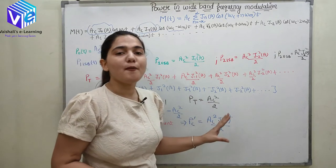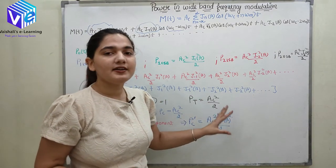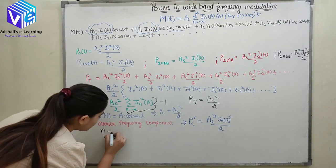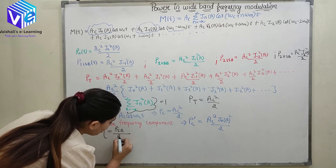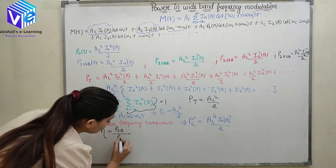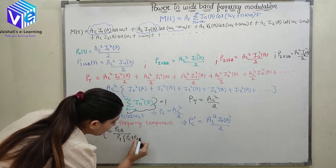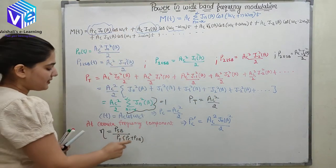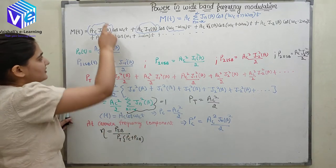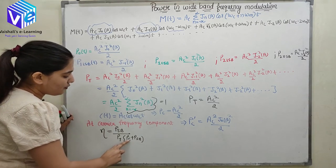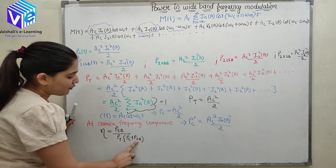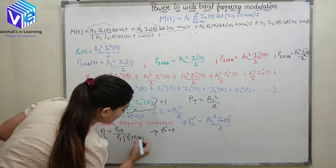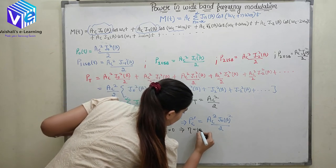Now if I reduce this component to 0, whenever this power is reduced to 0, I will get 100% efficiency, because efficiency = power of the sideband / total power. The total power equals the power of carrier plus the power of sidebands. All components except the first term represent the sidebands. Whenever the carrier power term PC' is 0, the numerator and denominator both equal the sideband power, giving 100% efficiency.